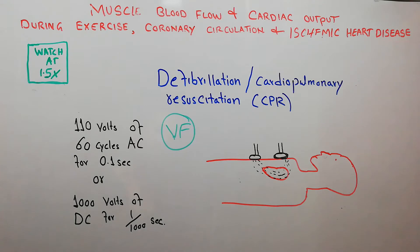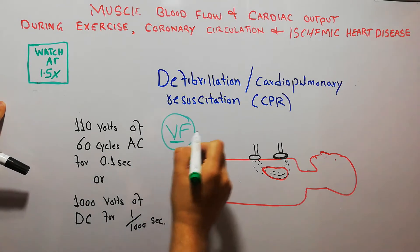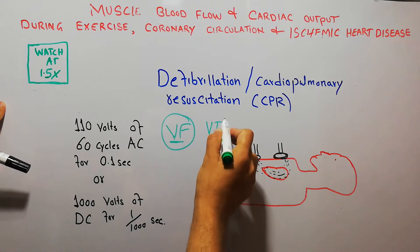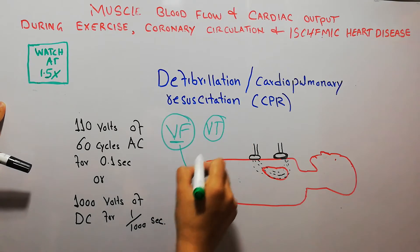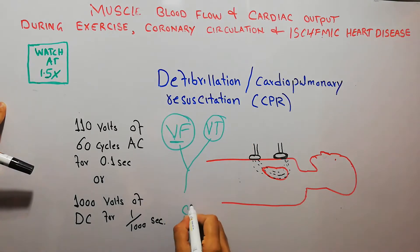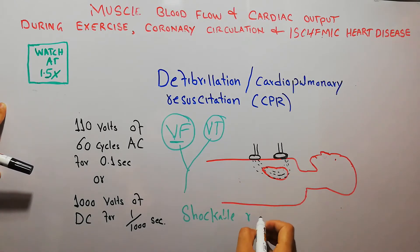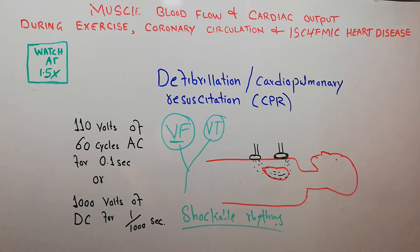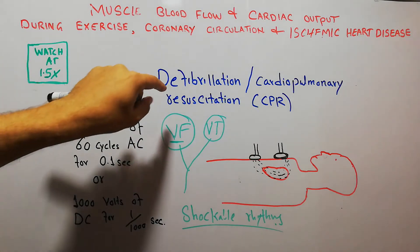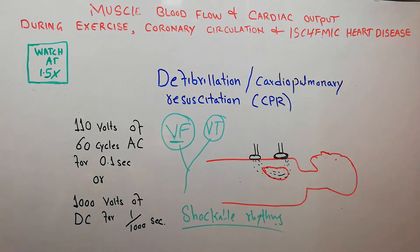Defibrillation is most commonly used in ventricular fibrillation and ventricular tachycardia — both of these are considered shockable rhythms. There are many other abnormalities in the heart which are not shockable and in which an electric shock cannot be given.